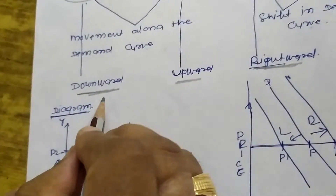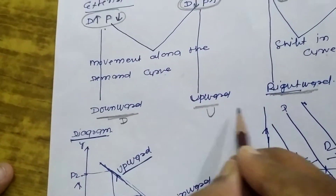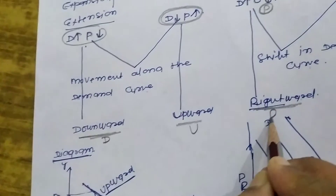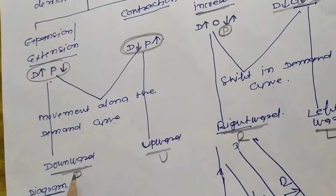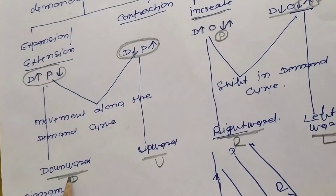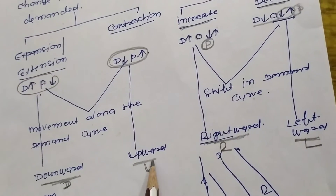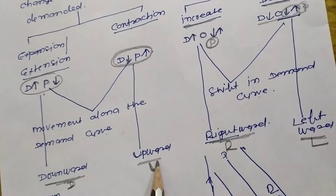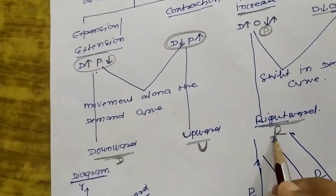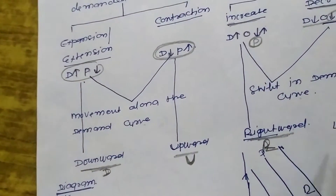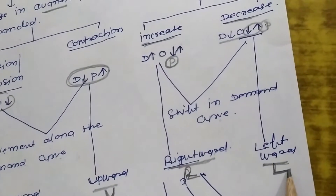To remember this, I have made a word: D-U-R-L. Expansion → D, downward. Contraction → U, upward. Increase → R, shift rightward. Decrease → L, shift leftward.